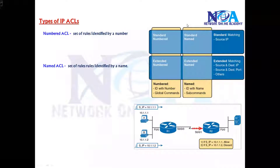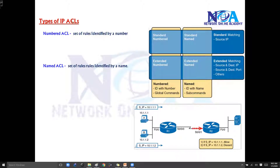The next thing we will try to understand is the different types of ACLs. We are talking about IP ACLs here — there will be separate ACLs like VLAN ACLs as well. So here we are talking about IP ACLs, and in IP ACLs there are mainly two categories.